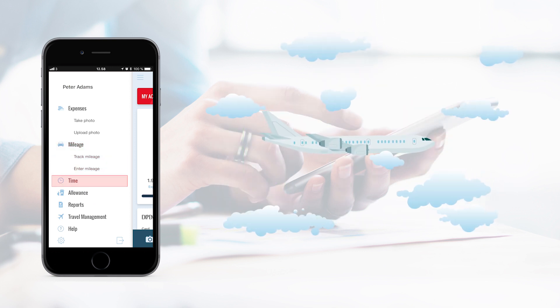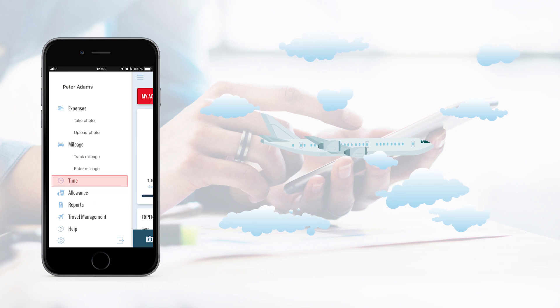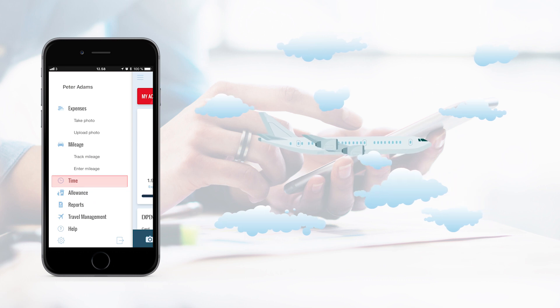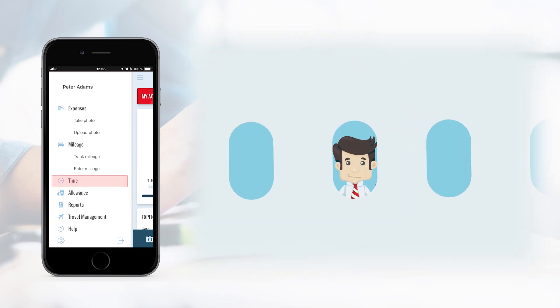Time registration is a feature in which you can, for example, register sickness, vacation, flex and children's sickness. This feature makes it easy for you to manage your hours and absence.